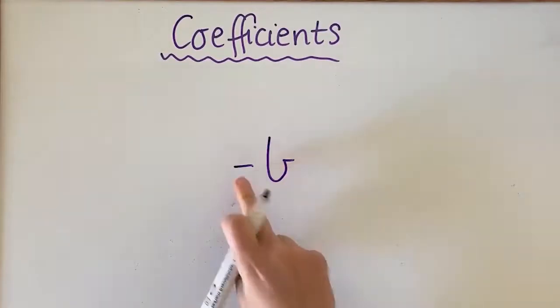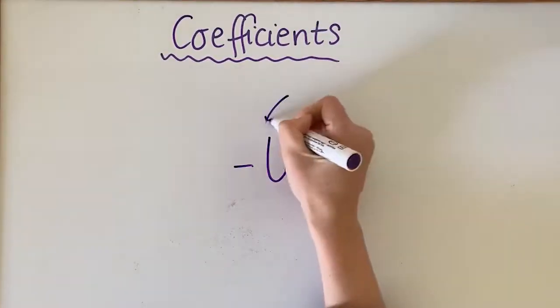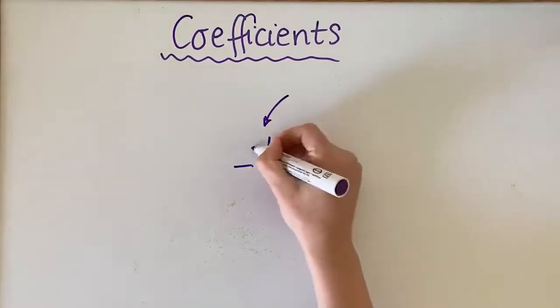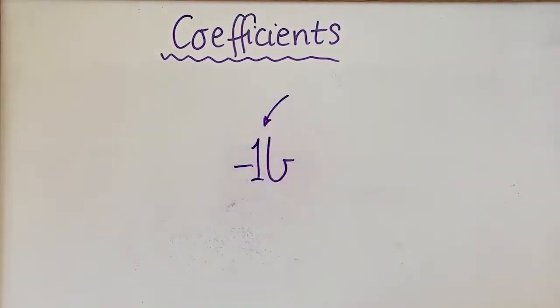Similar to that, if you see just a negative sign sitting in front of it, it looks like there's nothing but in fact it's actually negative 1 as the coefficient.